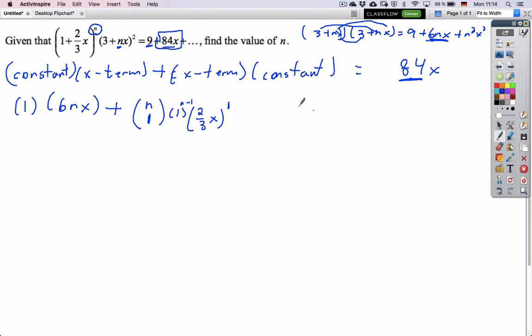Times the constant from this, which is 9, and that will be the 84 that we're after. Here, a simple addition, 6nx, n choose 1 is n, 1 to any power is 1, 2/3 x is our x term, and you have 12 times by 9 from the constant of this second piece.